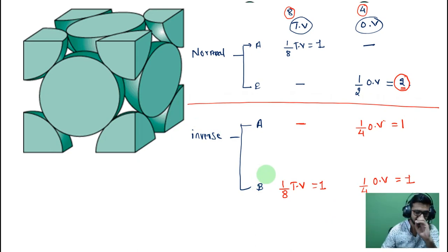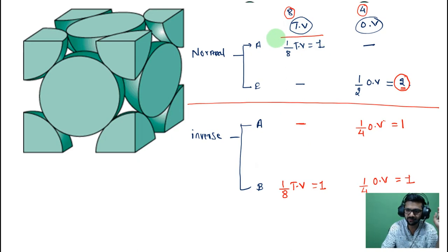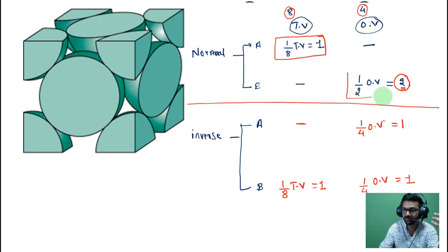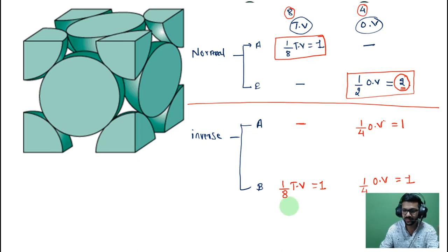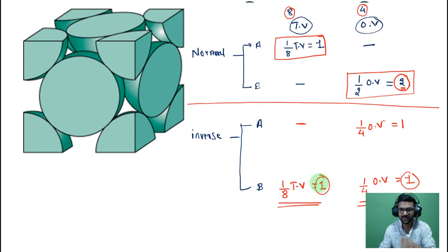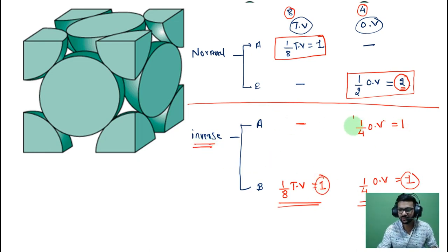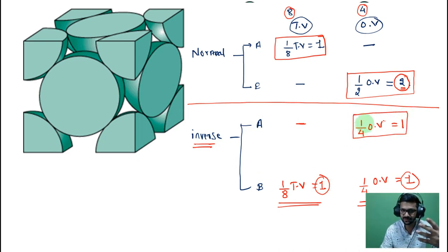The main difference: in normal spinel, the whole B is in octahedral void. In inverse spinel, B is split — one atom in octahedral and one atom in tetrahedral — and A shifts to octahedral void. This is the key distinction between normal spinel and inverse spinel compounds, which appears frequently in coordination chemistry questions.